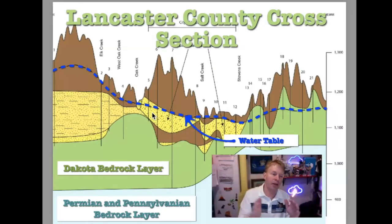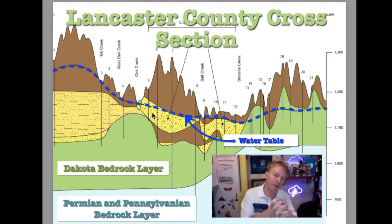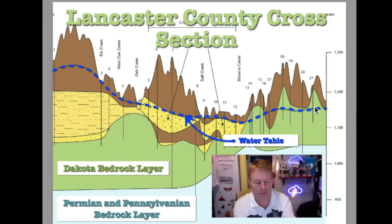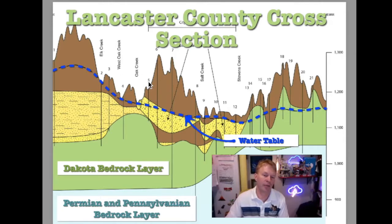Jumping to Lancaster County cross-section: this is the water table and soil layers in Lancaster County. I've highlighted the aquifer water table — the height of the water table — and that's the blue dash line, which crosses through the section. There are a couple of Dakota bedrock layers. The creeks are labeled so you can get a feel for where you're looking at. This is an east-west cross-section.